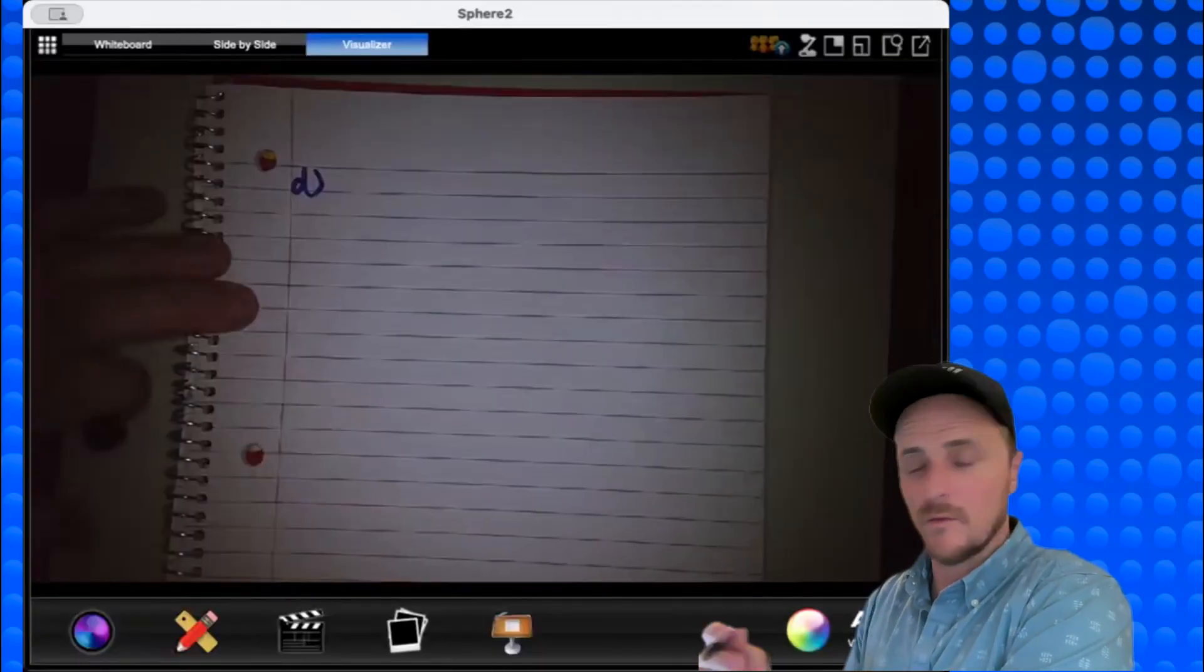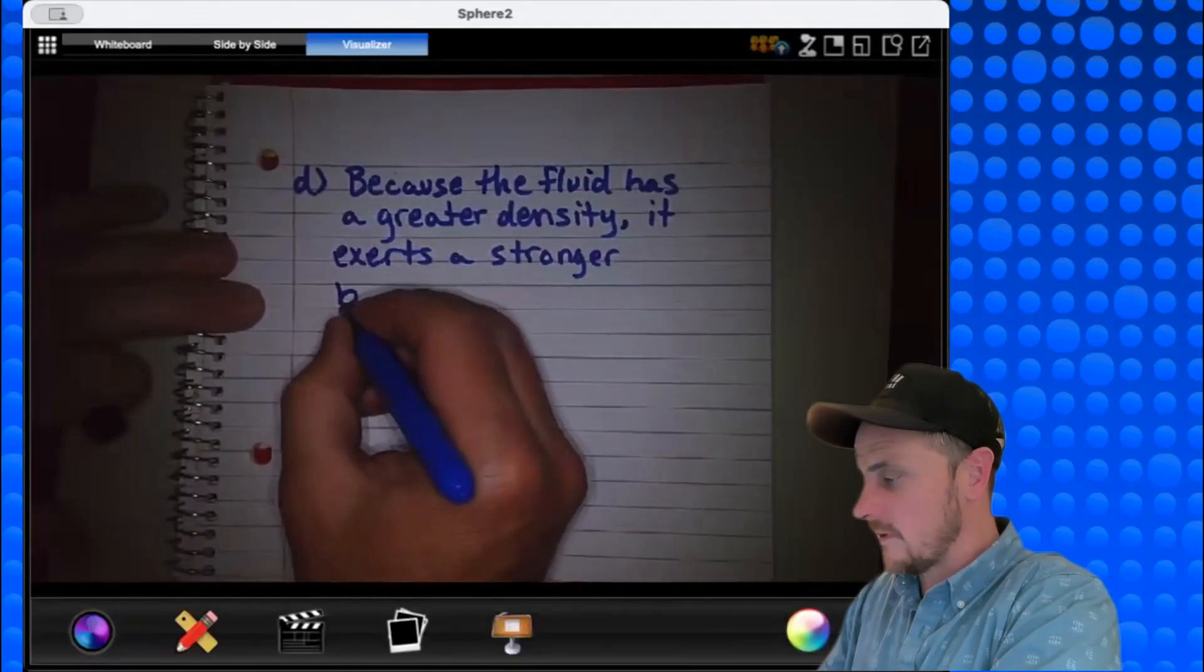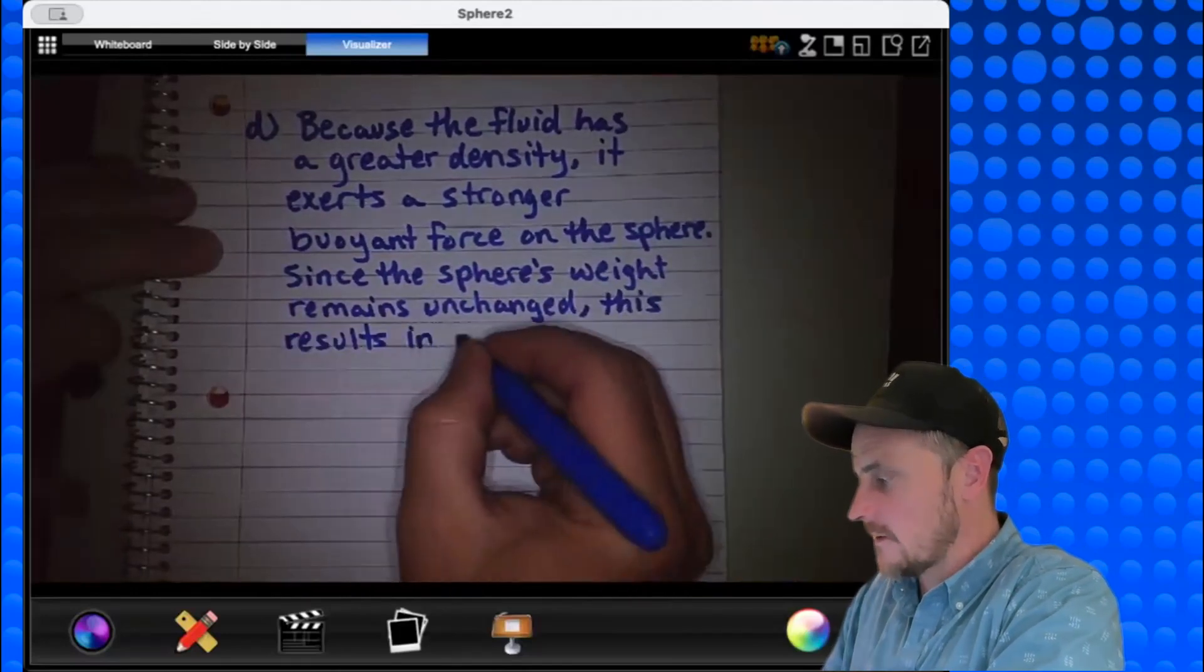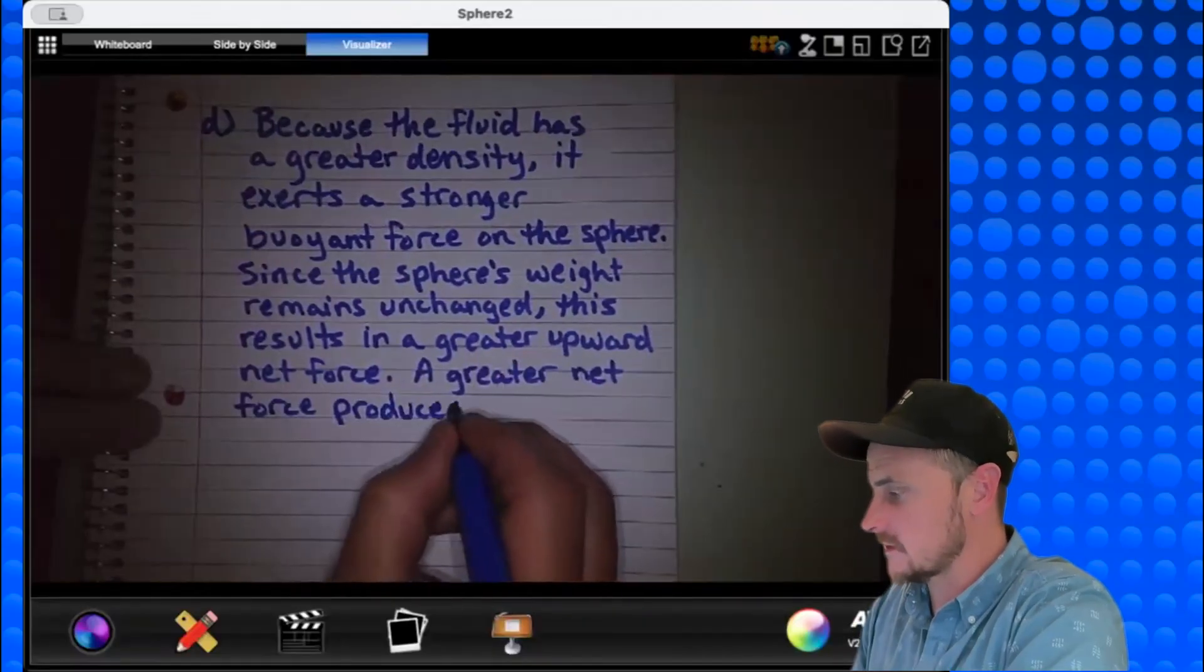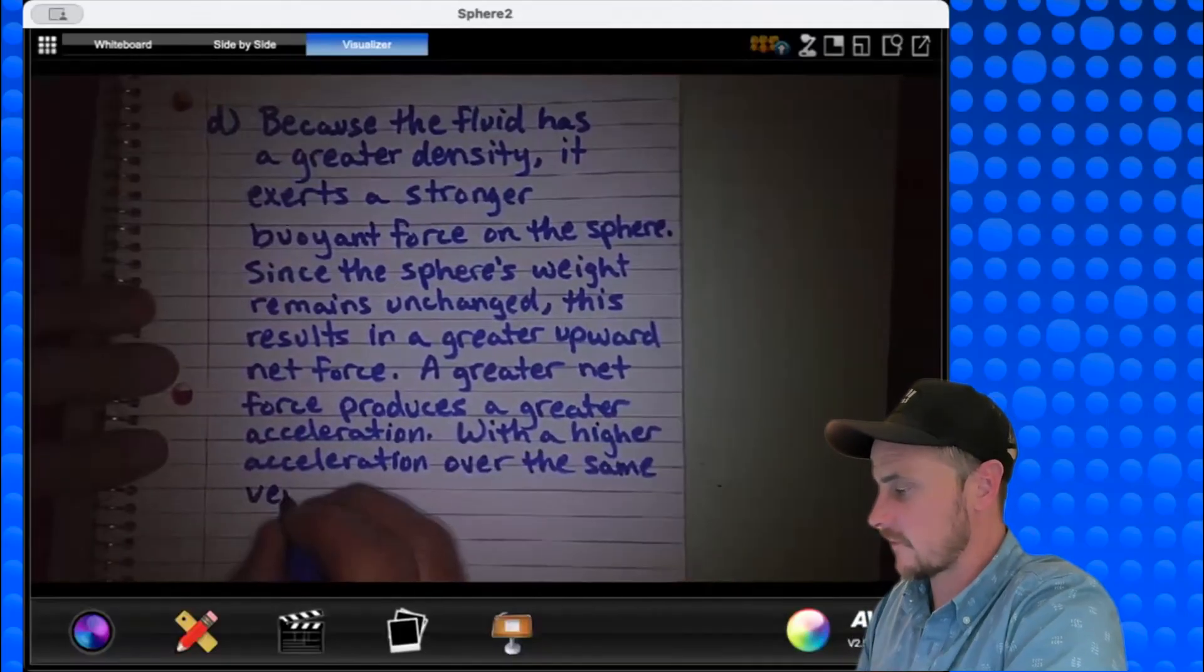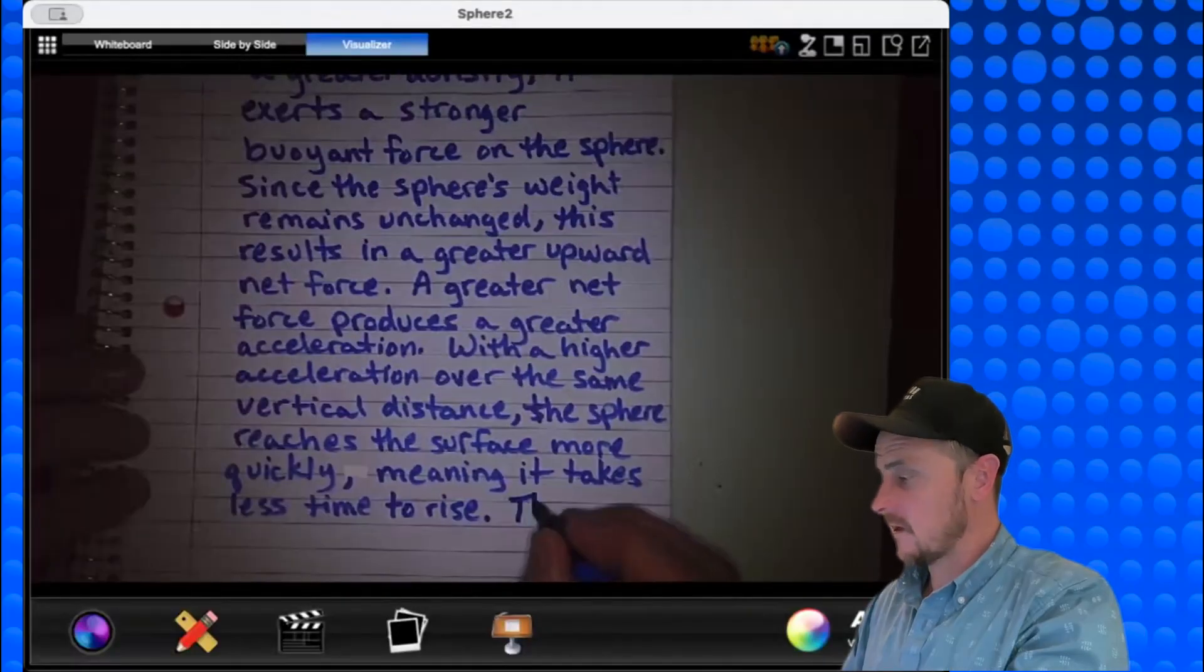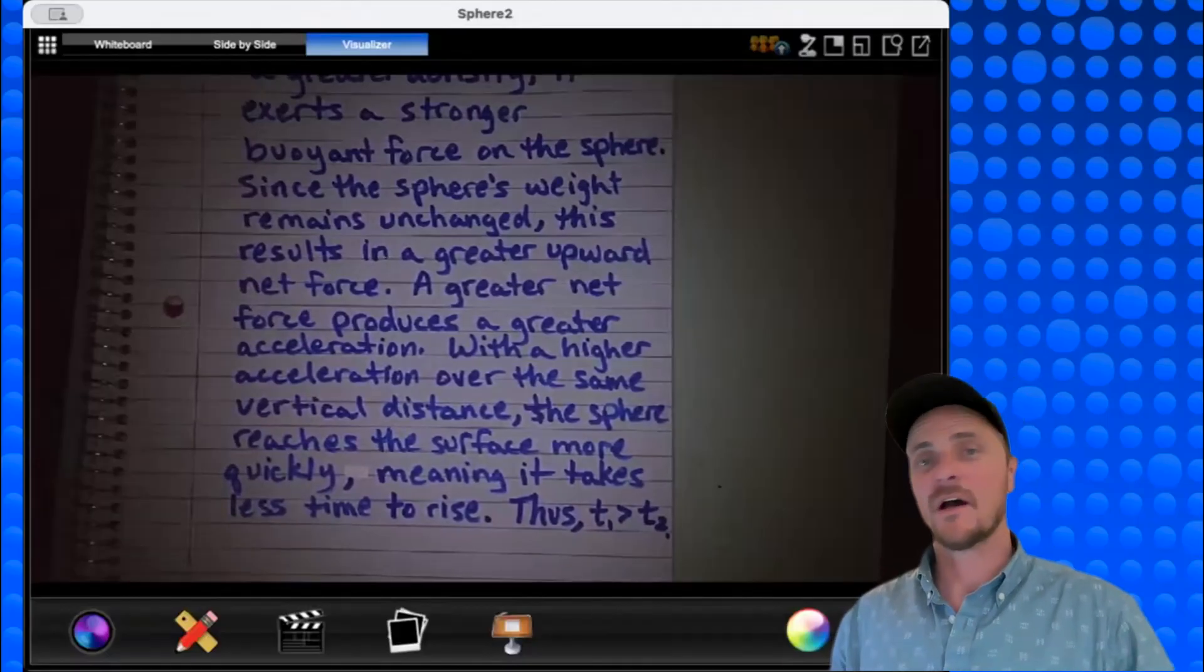So we would say the following. Because the fluid has a greater density, it exerts a stronger buoyant force on the sphere. Since the sphere's weight remains unchanged, this results in a greater upward net force. A greater net force produces a greater acceleration. With a higher acceleration over the same vertical distance, the sphere reaches the surface more quickly, meaning it takes less time to rise. Thus, t1 is greater than t2. And that'll do it, everybody. We got through another one.